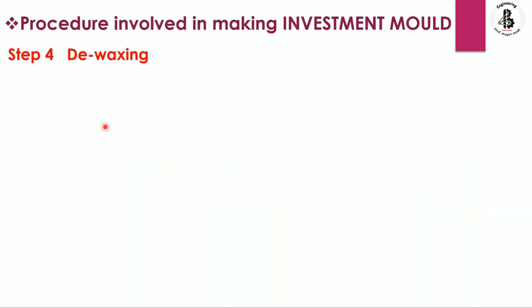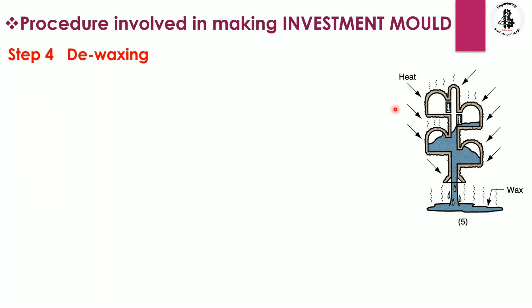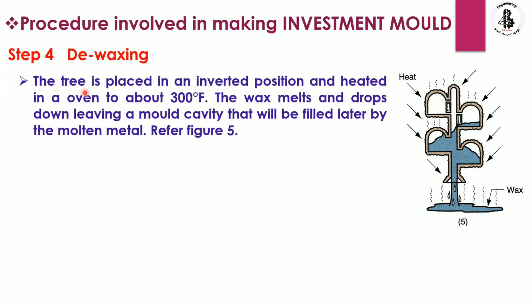The next step in the investment mold process is de-waxing. The tree is placed in an inverted position and heated in an oven to about 300 degrees Fahrenheit. The wax melts and drops down, leaving a mold cavity that will later be filled by molten metal.